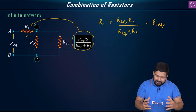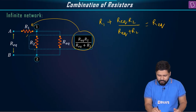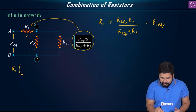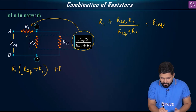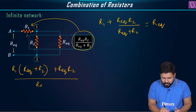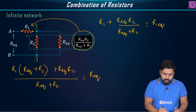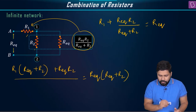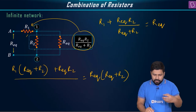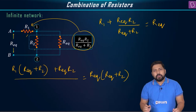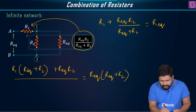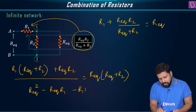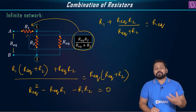The net equivalent resistance is R1 plus R_equivalent × R2 divided by R_equivalent + R2, and this equals R equivalent. Multiplying through and rearranging gives: R_equivalent² − R_equivalent × R1 − R1 × R2 = 0. This is a quadratic expression in R equivalent.